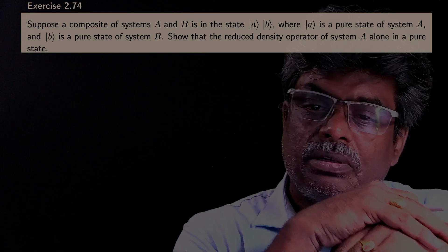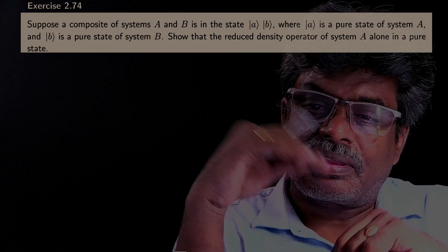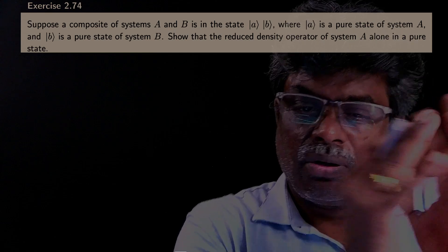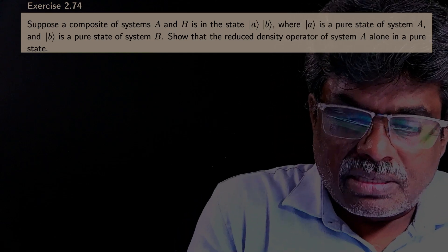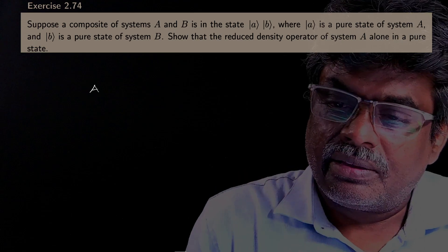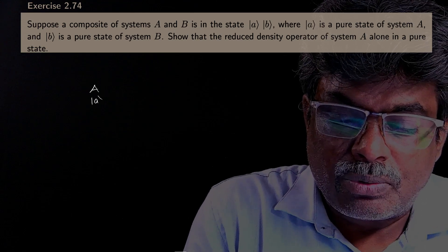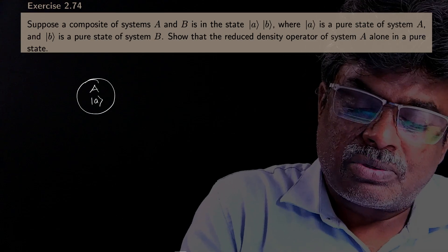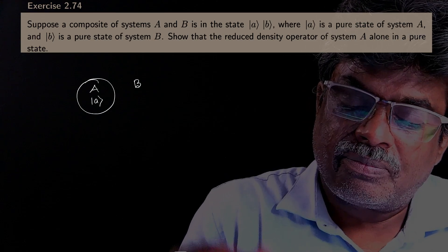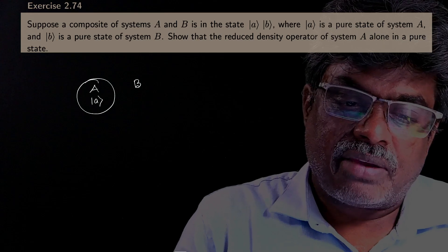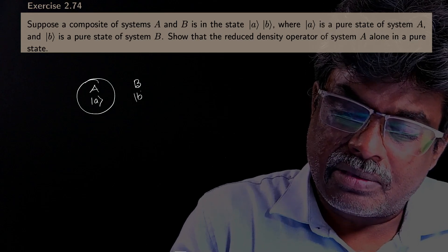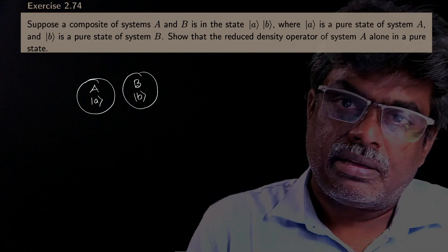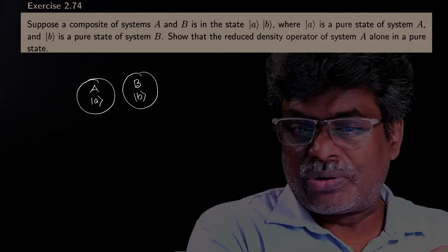In this problem, they have given two systems A and B. Let us suppose this is the system A which is having a pure state |A⟩, and let us suppose another system B which is having a pure state |B⟩. |B⟩ is the pure state of B and |A⟩ is the pure state of A.